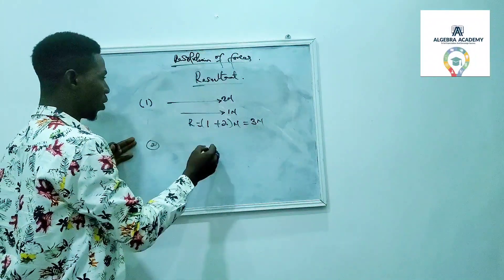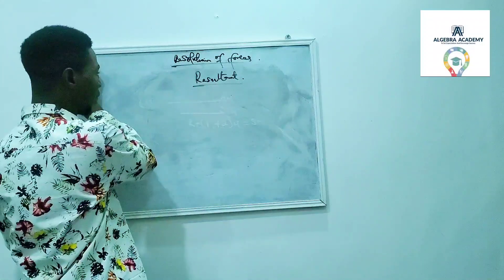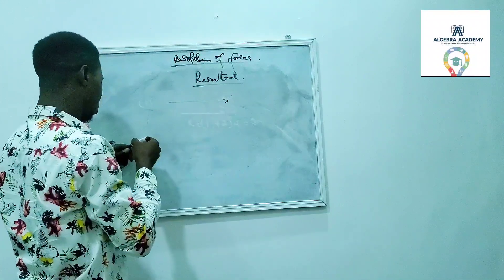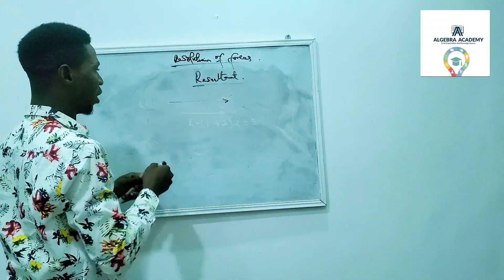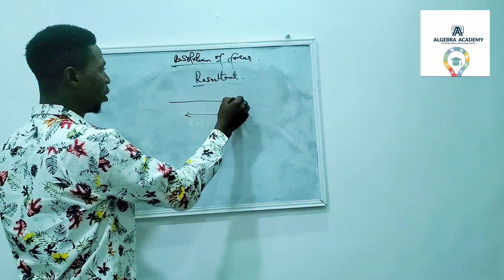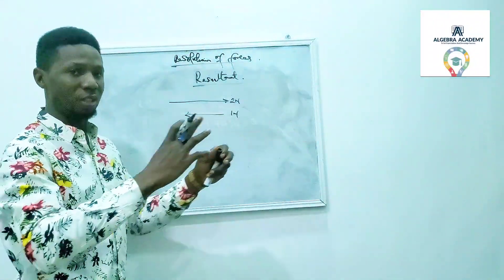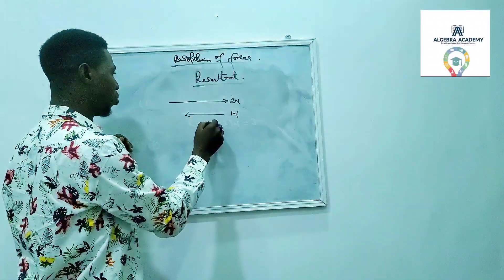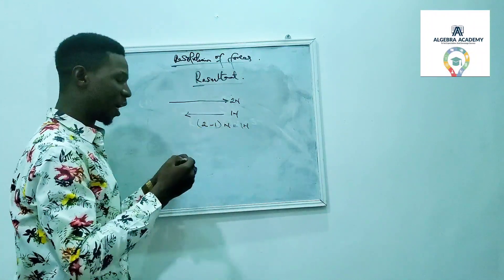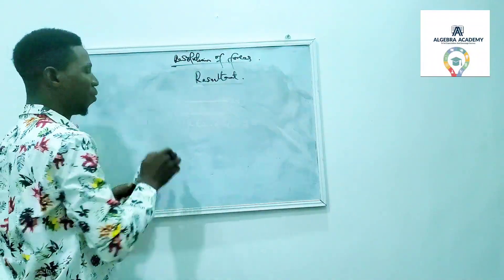The second case is when forces are acting in different directions — one acting this way and the other acting in the opposite direction. If one is 2 newtons and the other is 1 newton, we subtract because they are not in the same direction: 2 minus 1 gives you 1 newton. That is the case when forces act in different parallel directions.